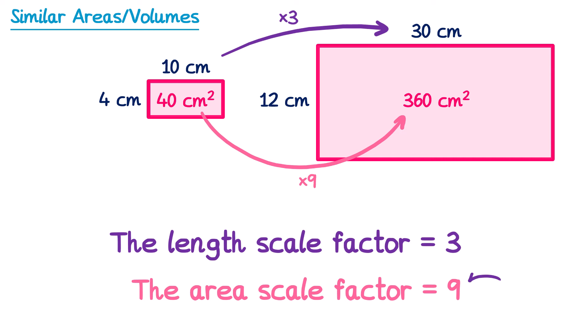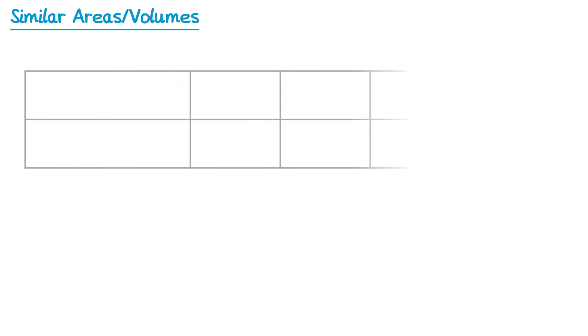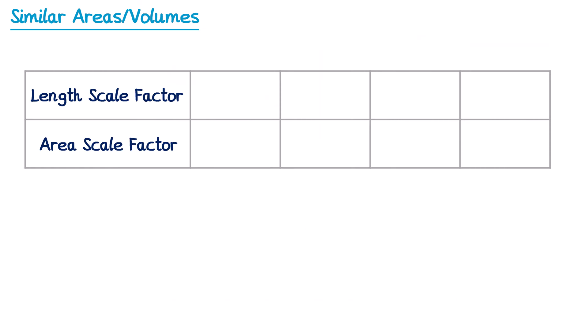Some of you may spot that this 9 comes from 3 times 3, or 3 squared. So if we know the scale factor for the length, we can find the scale factor for the area by squaring it — 3 squared gives you 9. For instance, looking at a table of length scale factors and area scale factors: if the length scale factor is 2, the area scale factor is 2 squared which is 4. If the length scale factor is 5, the area scale factor is 5 squared which is 25.